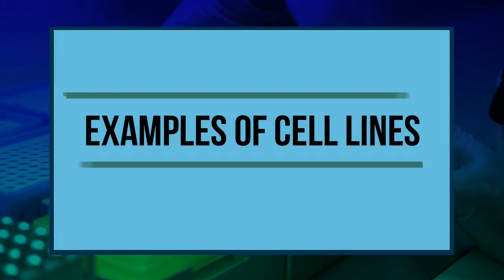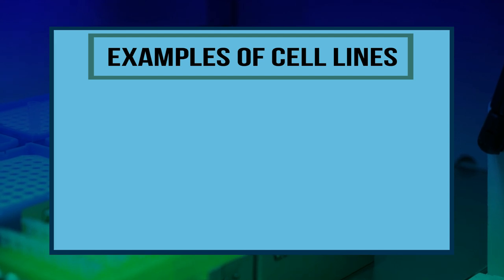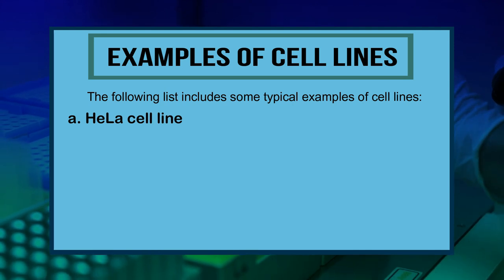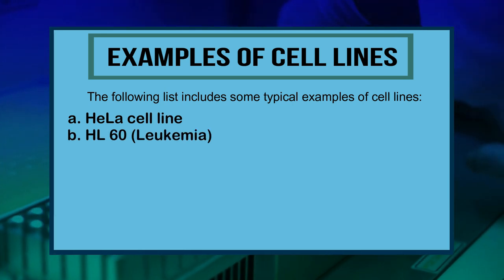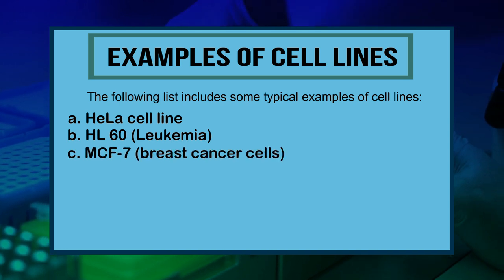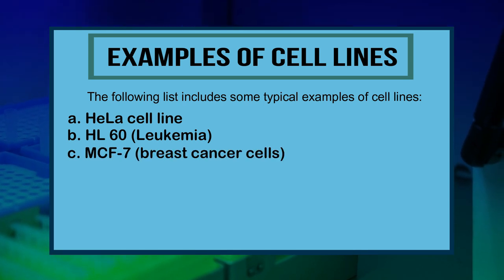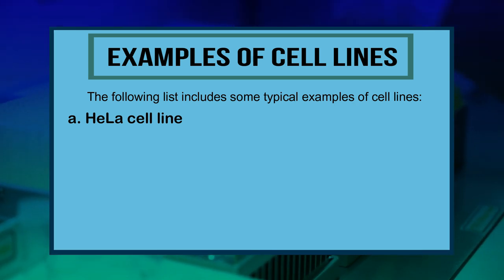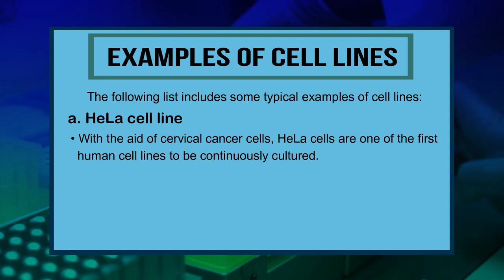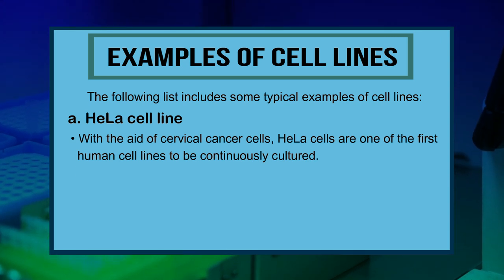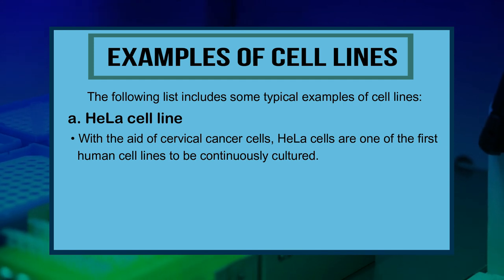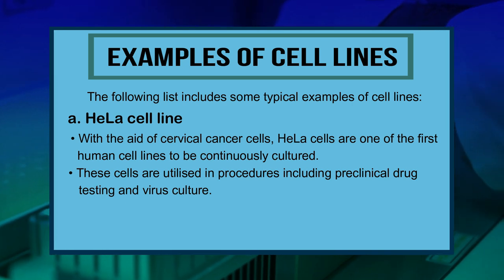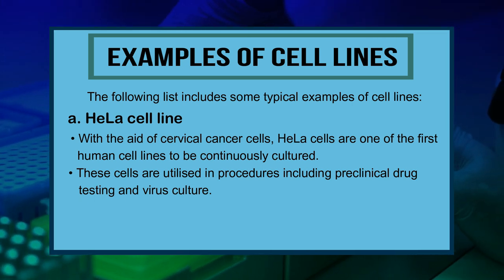Some typical examples of cell lines include: number one, HeLa cell line; number two, HL60 leukemia; number three, MCF7 breast cancer cells. HeLa cell lines are one of the first human cell lines to be continuously cultured, derived from cervical cancer cells. These cells are utilized in procedures including preclinical drug testing and virus culture.